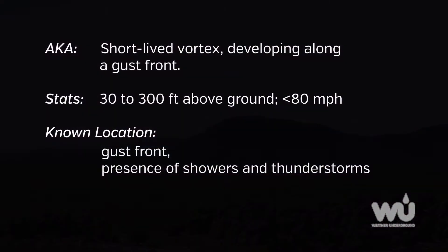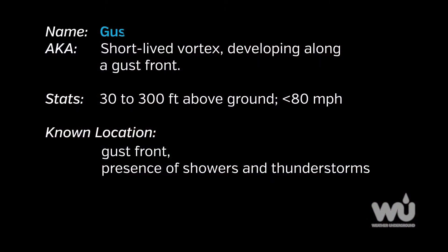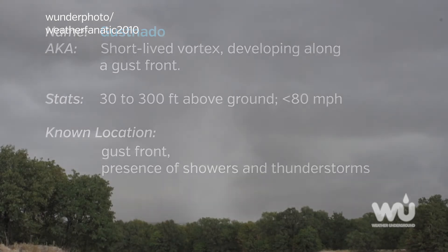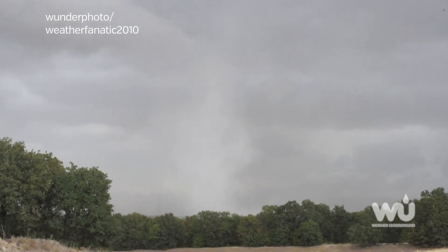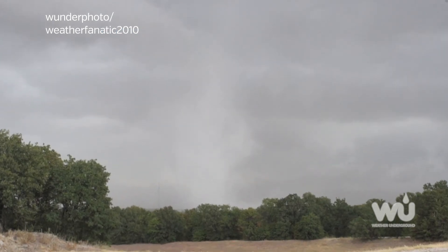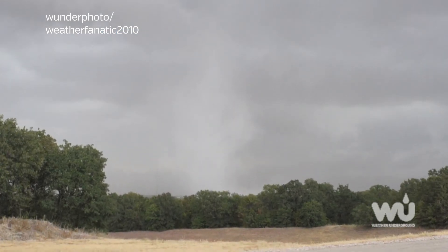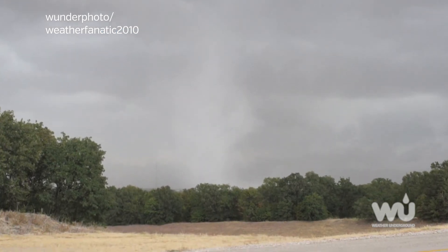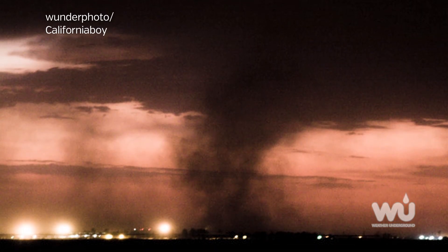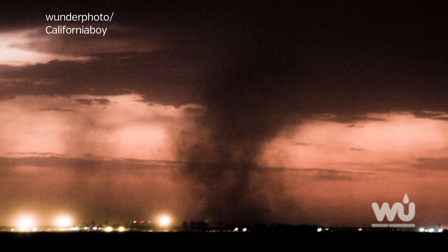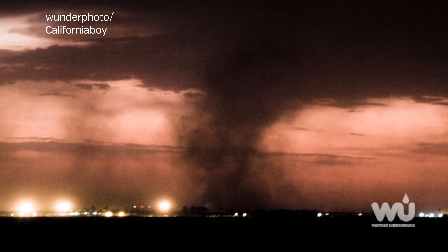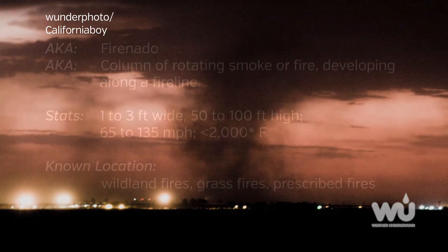A gustnado is a short-lived vortex that develops along a gust front, associated with showers and thunderstorms. Often, gustnadoes are wispy debris clouds or dust whirls near the ground that seem to have no connection to the thunderstorm cloud above. While their winds can cause major damage, they lack the large-scale rotation associated with tornadoes.